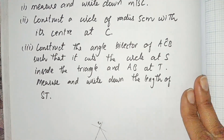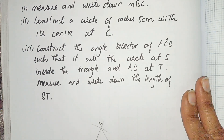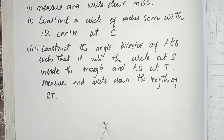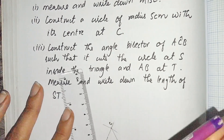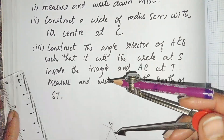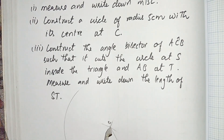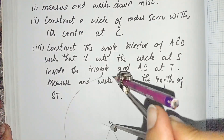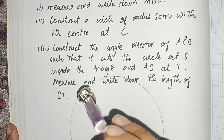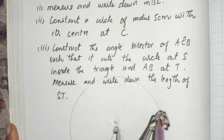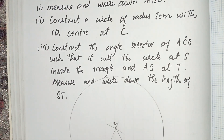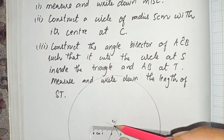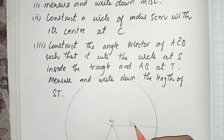Now part number two: construct a circle of radius 5 cm with its center at C. We have to make a circle of radius 5 cm whose center is C. I open the compass to 5 cm, place it at point C and draw a circle. This is a circle of radius 5 cm.